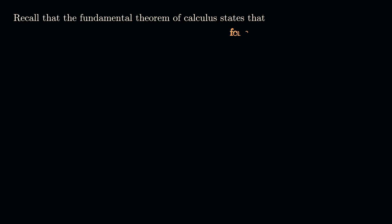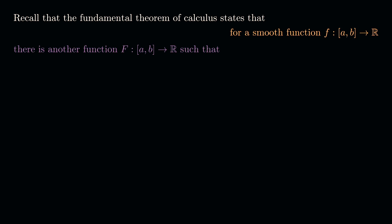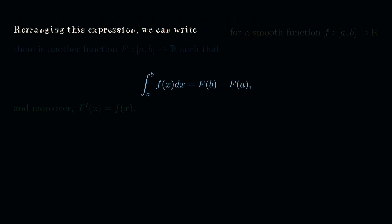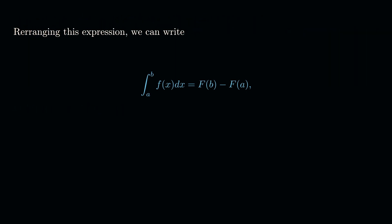Recall that the fundamental theorem of calculus says: for a smooth function f defined on the closed interval [a, b] into ℝ, there is a smooth function F on the same interval such that the integral from a to b of f(x) dx equals F(b) minus F(a). Moreover, F'(x) equals f(x) — in other words, we have an antiderivative. Rearranging, we can write f(b) equals f(a) plus the integral from a to b of f'(x) dx.